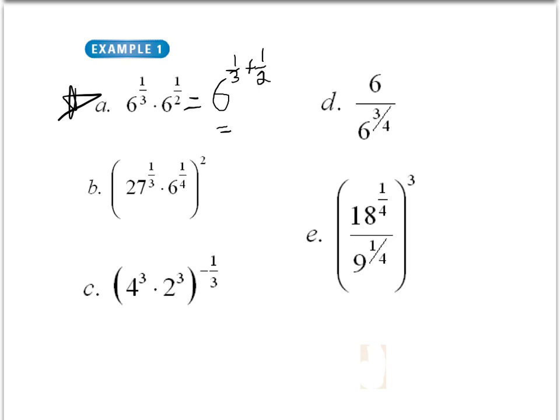Now, we can't add these where they are, we have to change the bases. If we use what we know about common denominators, we're going to get 2 over 6, sorry, 6 plus 3 over 6. And when we simplify that, we'll get 6 to the 5 sixths.